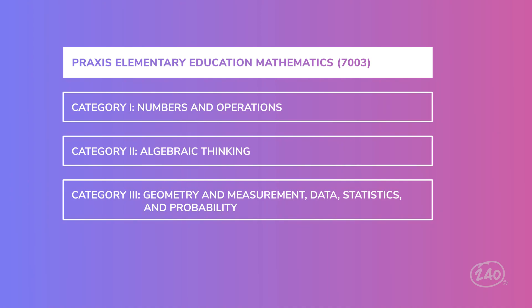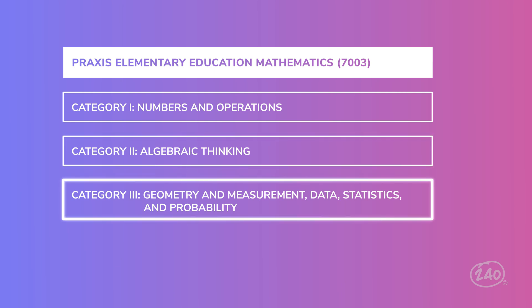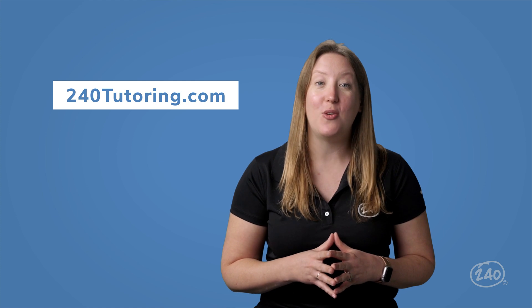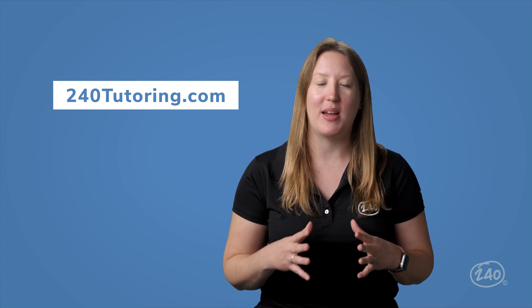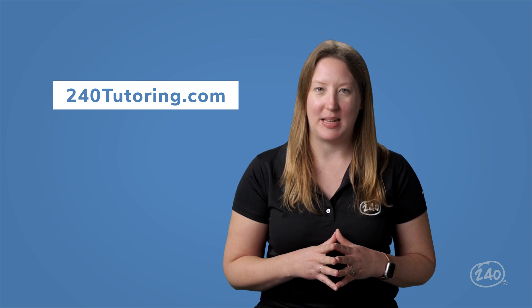Let's look at the content categories. Category 1: 16 questions about numbers and operations. Category 2: 12 questions about algebraic thinking. Category 3: 12 questions about geometry and measurement, data, statistics, and probability. Thankfully, we've done the research for you and you can find exactly what you need to know in our study guide. But let's go ahead and talk about some key concepts now.